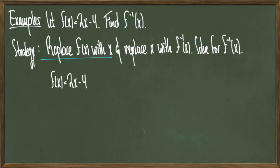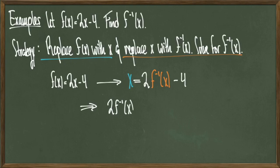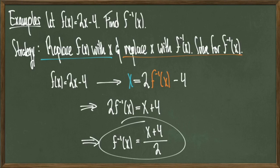So, with these replacements, f of x equals 2x minus 4 becomes x equals 2 times f inverse of x minus 4. As I run through the steps, I see that I get 2 times f inverse of x equals x plus 4, which tells me that f inverse of x is equal to x plus 4 over 2, and we're done.